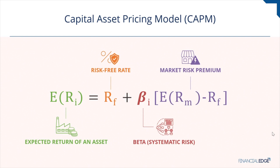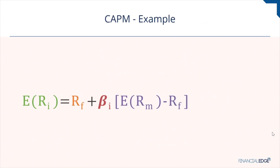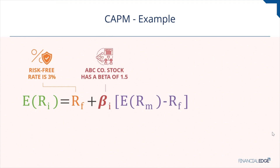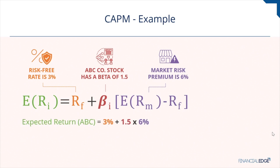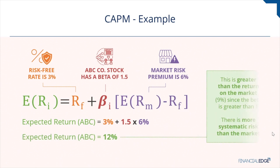Two assets with the same beta will have the same expected return irrespective of the nature of those assets. Given an asset's systematic risk, the expected return can be calculated using CAPM. For example: the risk-free rate is 3%, the stock for ABC company has a beta of 1.5, and the market risk premium is 6%. The expected return is 3% plus 1.5 times 6%, or 12%. If beta is greater than 1, you would generally expect the asset to have a higher expected return than the overall market.